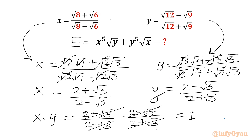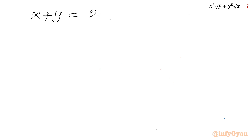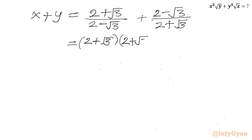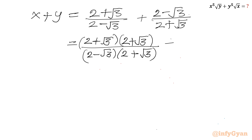Now x is 2 plus root 3 over 2 minus root 3, and y is 2 minus root 3 over 2 plus root 3. Let us add both. So x plus y equals 2 plus root 3 over 2 minus root 3 plus 2 minus root 3 over 2 plus root 3. We can take help of rationalization — let us rationalize 2 plus root 3 over 2 minus root 3 by multiplying numerator and denominator by 2 plus root 3, and rationalize the second term similarly.